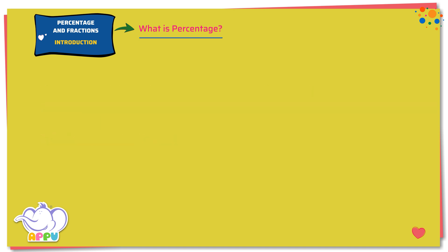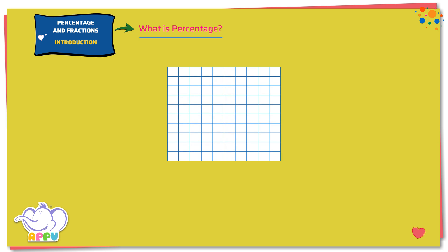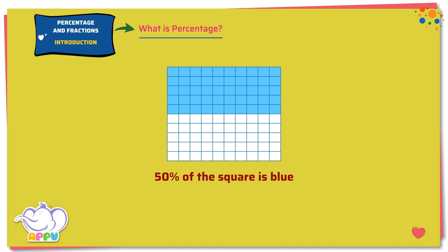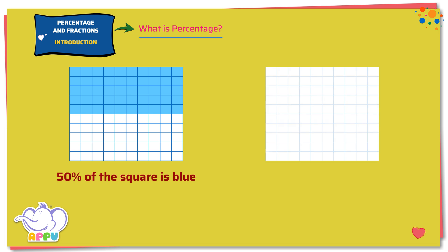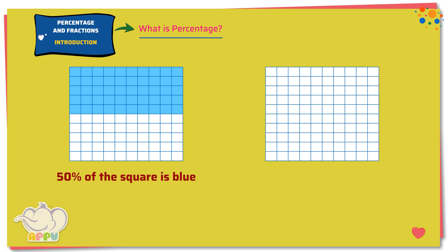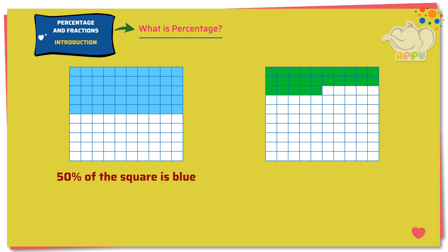Let's see an example. This is a square divided into 100 equal smaller squares. Let's shade 50 out of 100 smaller squares in blue — this means 50% of the square is blue. Now let's shade 25 out of 100 smaller squares in green — this means 25% of the square is green.